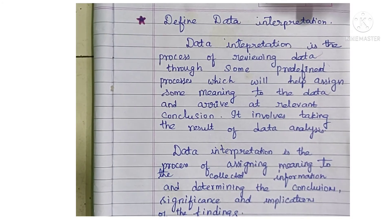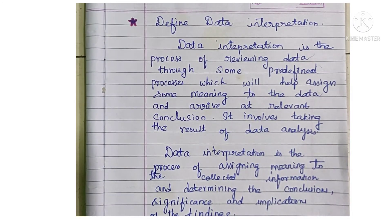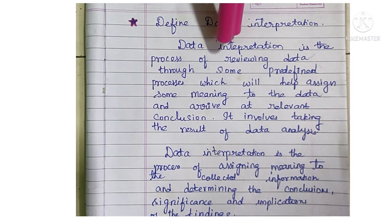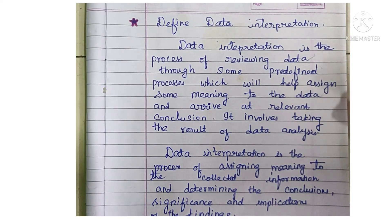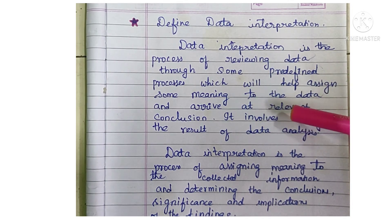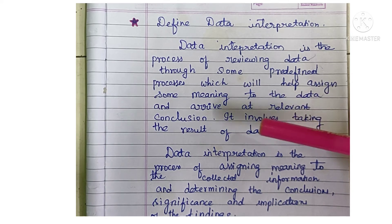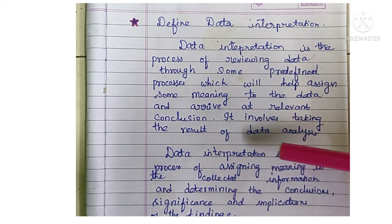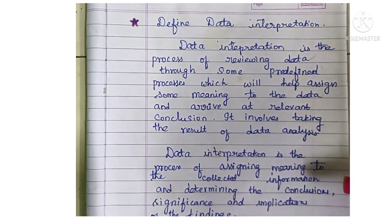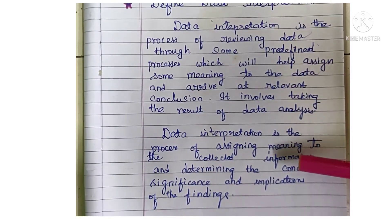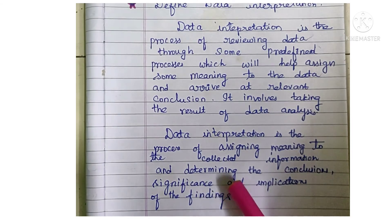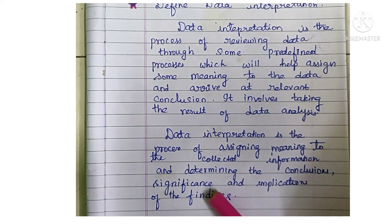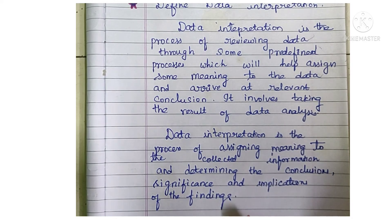The next question is: define data interpretation. Data interpretation is the process of reviewing data through predefined processes which help assign meaning to the data and arrive at relevant conclusions. It involves taking the results of data analysis. Data interpretation is the process of assigning meaning to the collected information and determining the conclusion, significance, and implications of the findings.